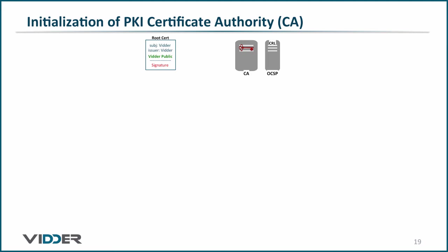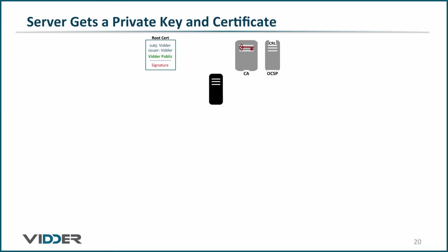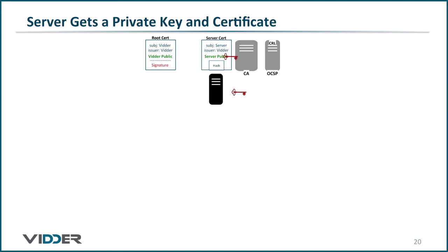Now the certificate authority can begin to act as a trusted third party. We will begin by providing a private key and certificate to a server. We start with a key pair and through a process called a certificate signing request, or CSR, we give the public key to the certificate authority. The certificate authority generates a certificate from a template specifically for server certs. Note that here the subject and issuer are different — the subject is the entity that will end up with the certificate and the issuer is the certificate authority. The certificate authority puts the server's public key in the cert, then hashes the cert and encrypts the hash with the private key of the certificate authority, and returns the certificate to the server.